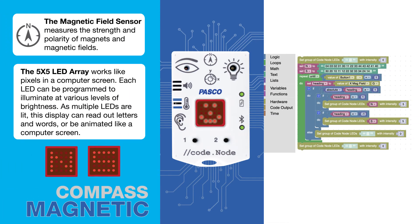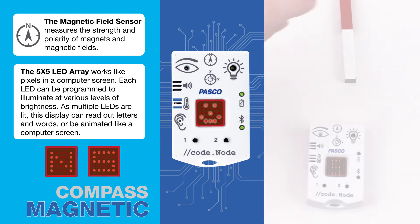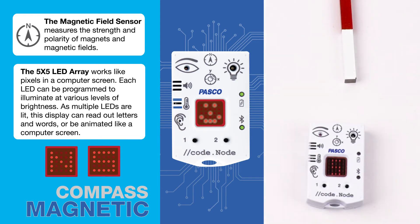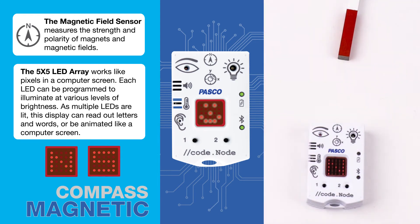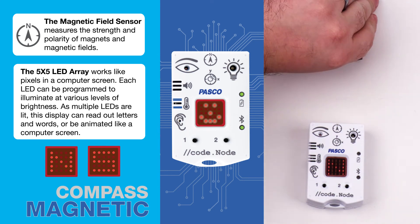In this example, the magnetic field sensor is measuring the magnet, and the LED display is programmed to display either an S for a magnetic south pole, or an N for a magnetic north pole.